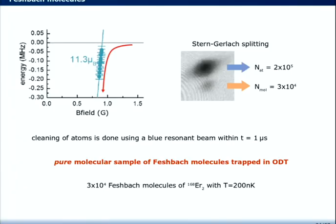So, then we tried to create a pure molecular sample by using this resonance at 900 milligauss. We started above the resonance and then ramped the magnetic field to a lower value to enter this molecular state. And we tested this by using a Stern-Gerlach-type experiment to split spatially the two clouds. And we see the residual atoms with a number of 2 times 10^5, and the created molecules with a number of 3 times 10^4. And in the experiment, we clean away the residual atoms by using a blue resonant laser beam, which is shining with a duration of only one microsecond to reduce heating in the cloud. So, finally, we end up with a pure molecular sample in the optical dipole trap with 3 times 10^4 molecules at a temperature of roughly 200 nanokelvin.